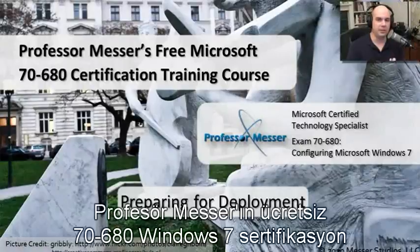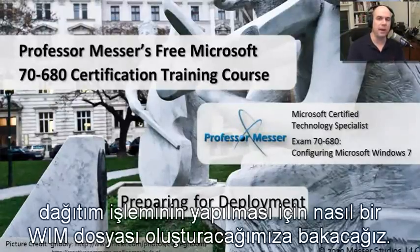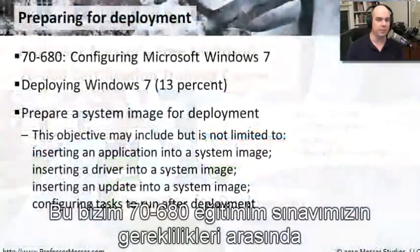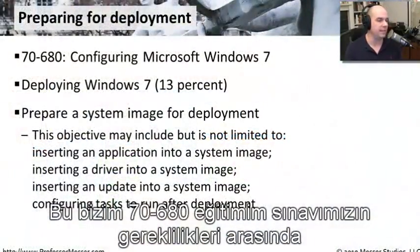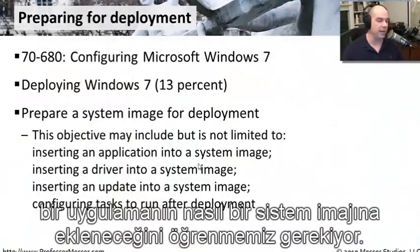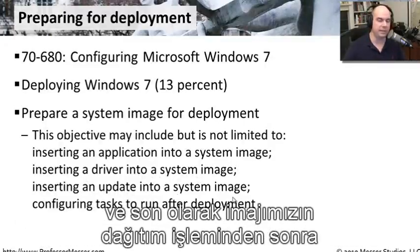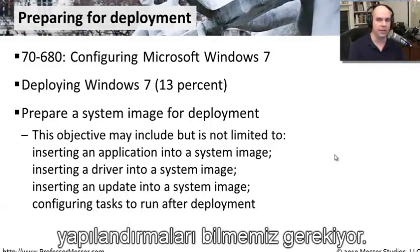Welcome to this module of Professor Messer's free Microsoft 70-680 certification training course. I'm James Messer. In this module we're going to look at how you can prepare a WIM file for deployment. This comes from our requirements for the 70-680 exam under the second section for deploying Windows 7. We need to learn how to insert an application into a system image, insert a driver into a system image, insert an update into a system image, and ultimately configure some tasks to run after we've deployed our image.